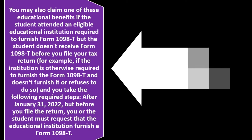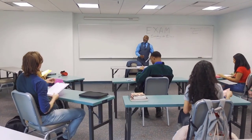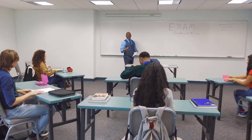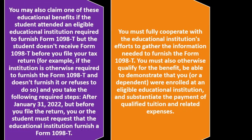You may also claim one of these educational benefits if the student attended an eligible institution required to furnish a Form 1098-T, but the form wasn't received before you filed your return. For example, if the institution is required to furnish the 1098-T but doesn't or refuses to do so, and you take the required steps after January 31, 2022 but before you file — you or the student must request that the institution furnish a Form 1098-T. So if you requested it and did your due diligence, that's another exception.